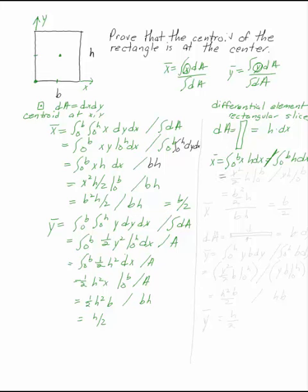It gives you x squared over 2h from 0 to b and xh from 0 to b. If you integrate that, substitute those in, that's b squared over 2h divided by bh is b over 2.